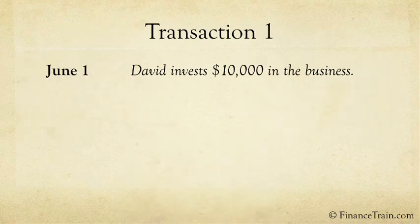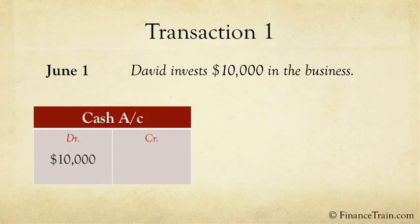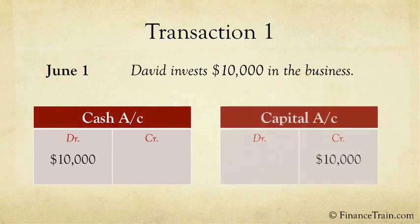In the first transaction, David invests $10,000 in the business. The two accounts affected are cash and the capital account. Cash, which is an asset, has increased, so the cash account will be debited. Capital has also increased, so the capital account will be credited.